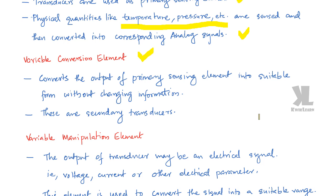The variable conversion element converts the output of the primary sensing element into a suitable form without changing the information. In short, these are called secondary transducers.